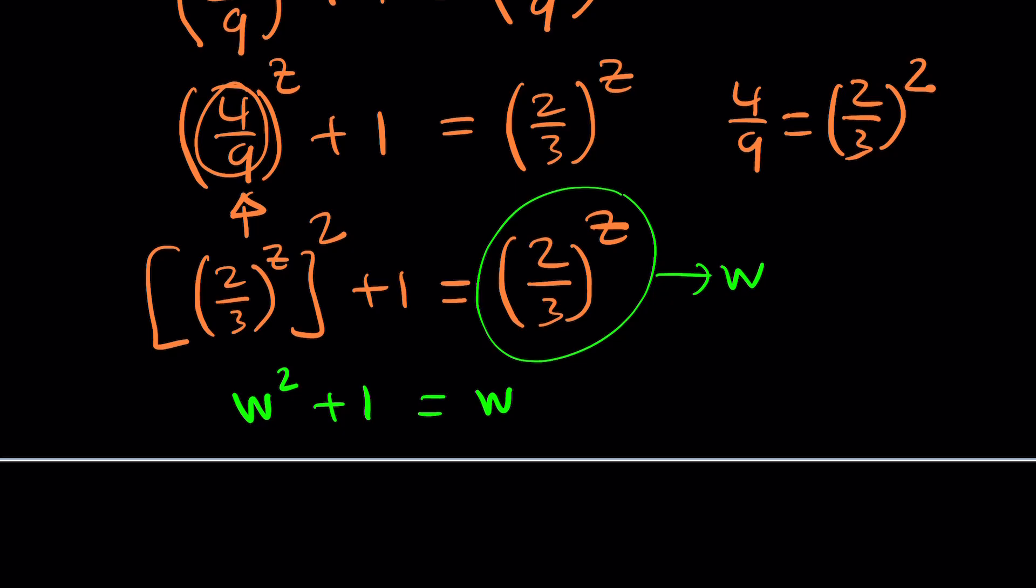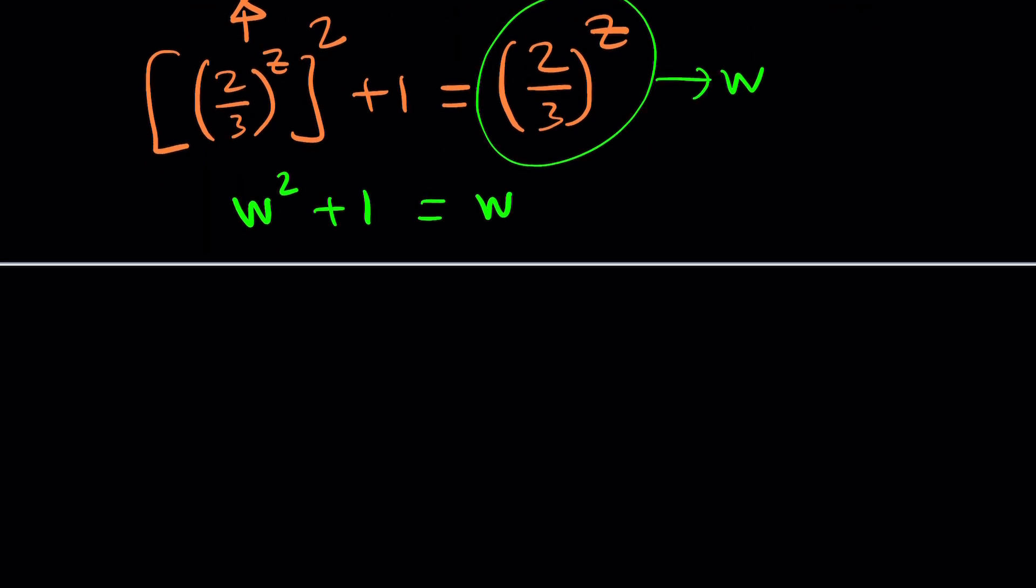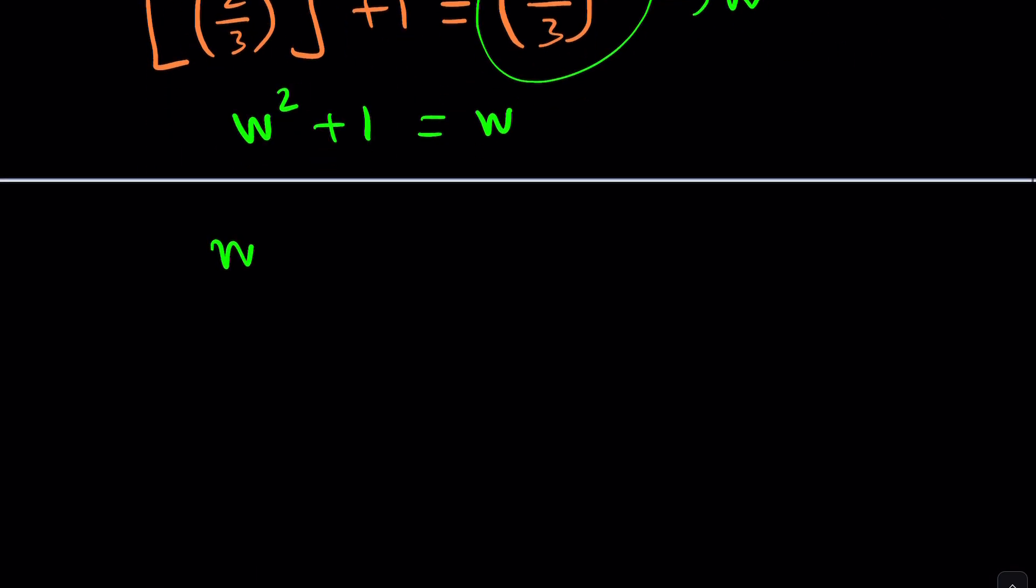Now what does this give us? A quadratic equation, which is easy to solve. You have a formula. You probably memorized it in maybe ninth grade, tenth grade. Let's put everything on the same side: w squared minus w plus 1 equals 0. And this equation should be familiar to you if you're not new to complex numbers. What do you do if you're new to complex numbers? Check out the lecture videos. This equation is particularly important. Why? Because it gives us the cube roots of a very important number, the complex cube roots I'm talking about.